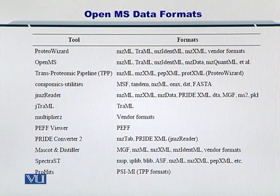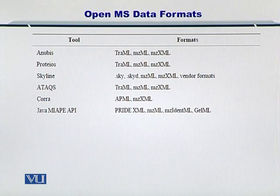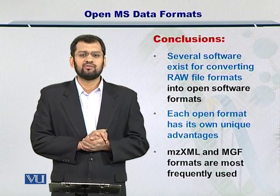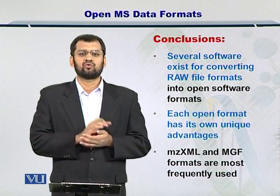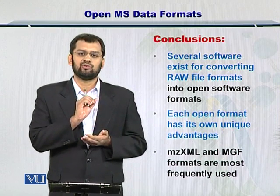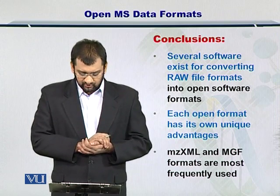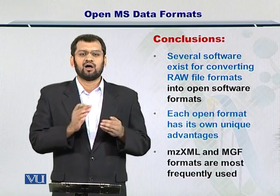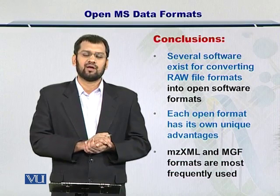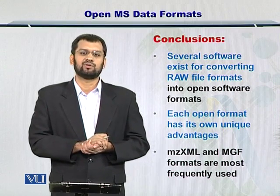Moreover, there are some other tools as well for the same purpose. They include Anubis, Proteus, Skyline, ATX, Quora, and so on. These tools also provide standard data file formats which you can use for your own processing. In conclusion, several open file formats exist and you can choose the one you like and write your algorithms using those formats. MZXML and MGF are the leaders in open file formats and are the most prevalent and most employed by bioinformaticians all over the world.